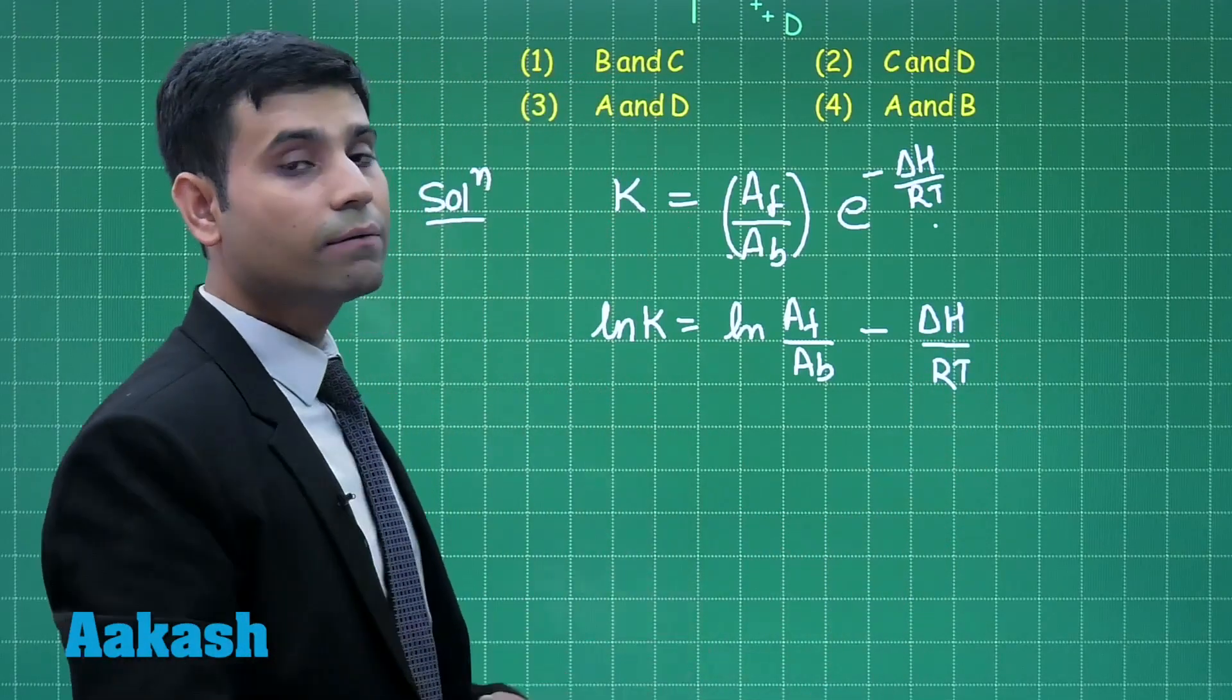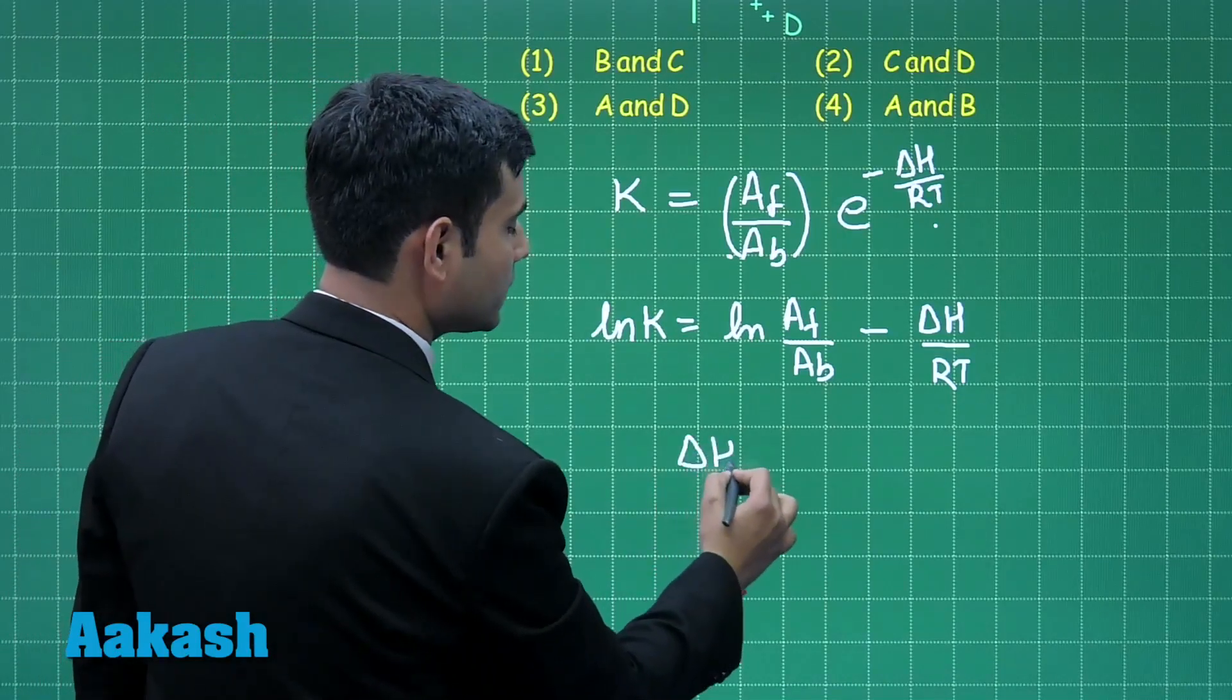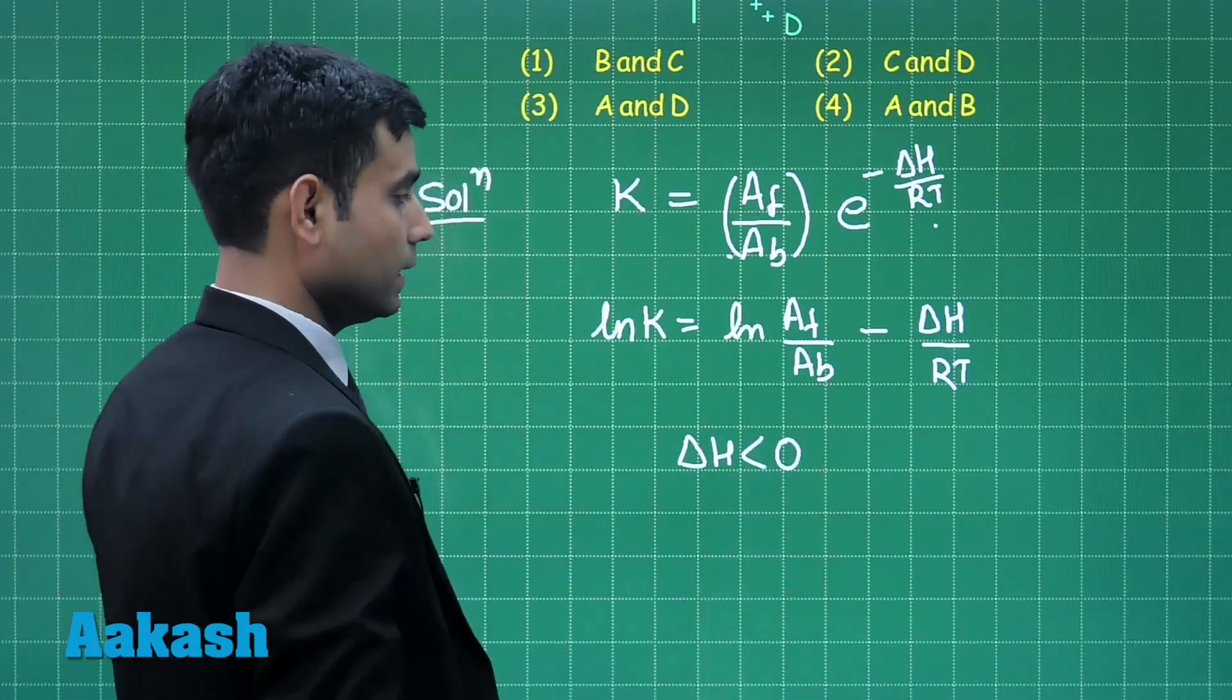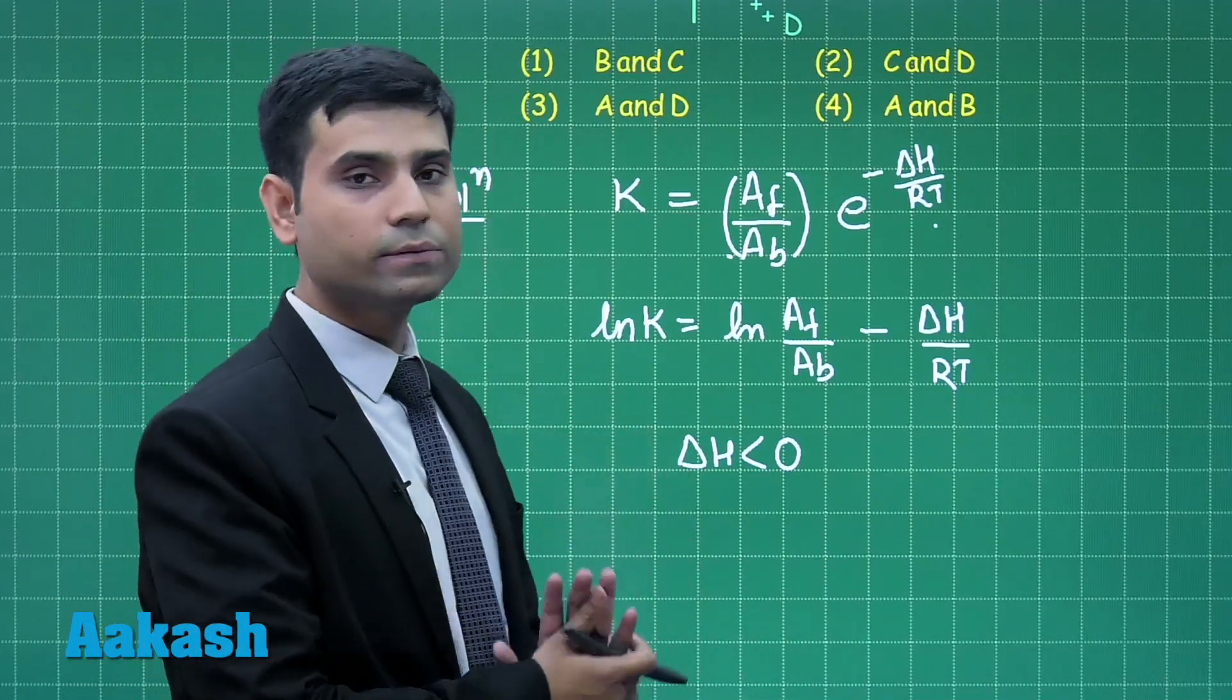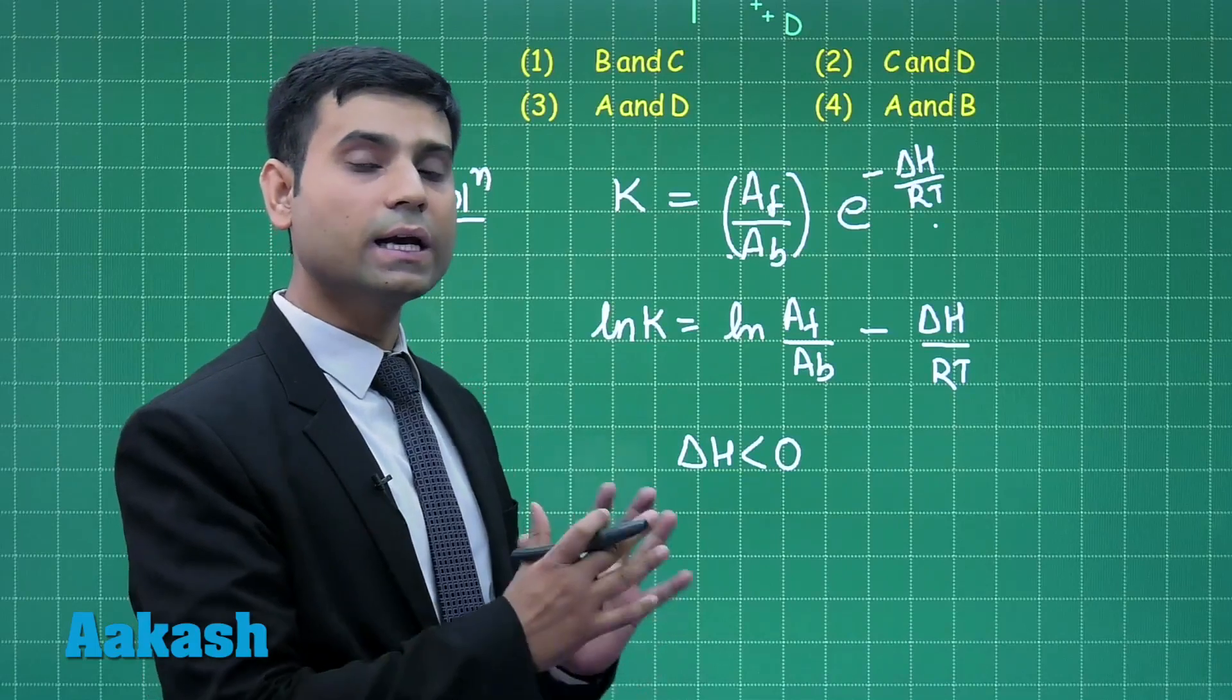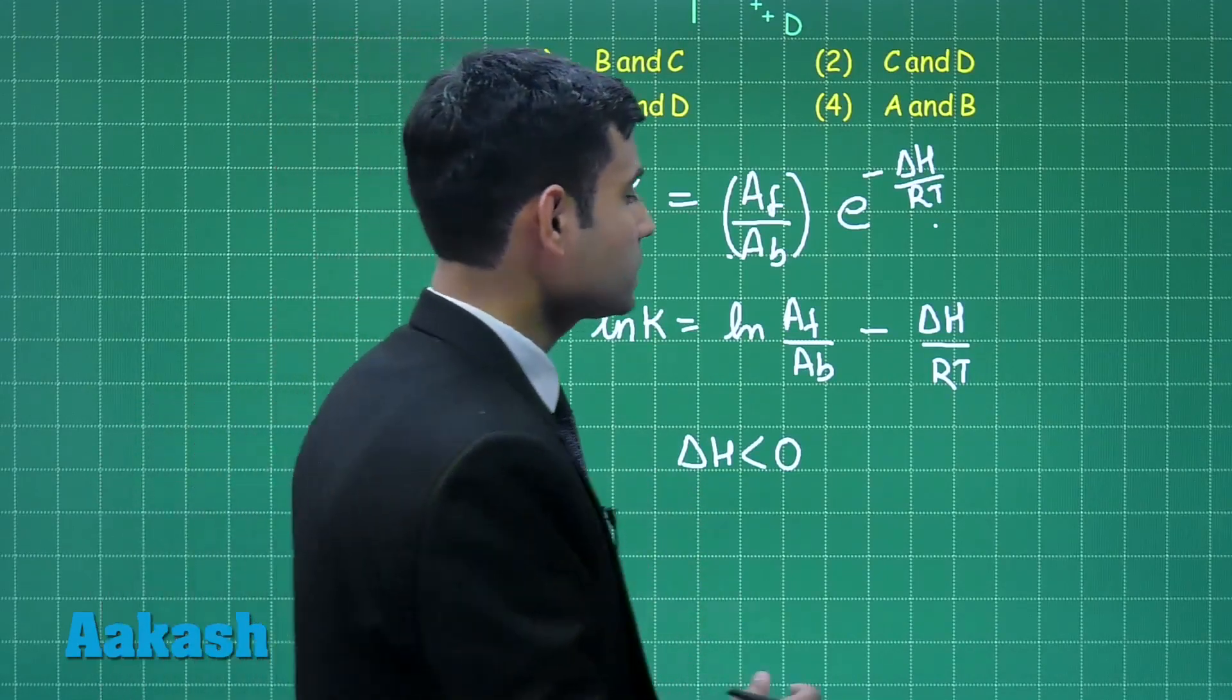As the reaction given is an exothermic reaction, so delta H will be less than 0. This equation is a straight line equation having a positive slope. So we will have straight line graph which is increasing, so let us go through the options.